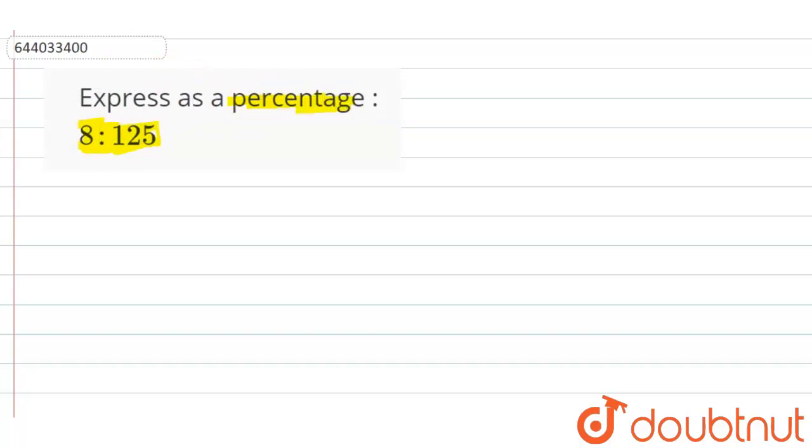So this ratio can be written as 8 upon 125. To convert this 8 upon 125, what can we do?